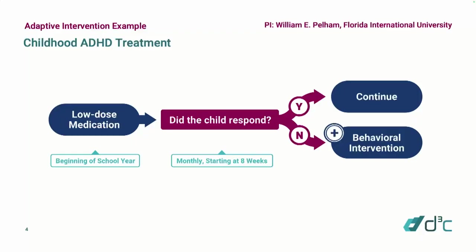Highly recommended: Linda Collins has a framework called the Multi-Phase Optimization Strategy. There's a book she wrote in 2018 describing the process of optimizing interventions, including adaptive interventions, and what kind of evidence you need to gather along the way to arrive at an intervention that is empirically based, effective, and resource efficient.